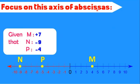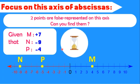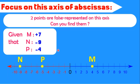Focus on this axis of abscissas. Given that M equals plus 7, N minus 9, P minus 4. Two points are false represented on this axis. Can you find them? Let's find them together. Let's start by M. M must be on plus 7. The abscissa of M is plus 7, so we must find plus 7. Is it on plus 7? No, it is on plus 4, so M is wrong.